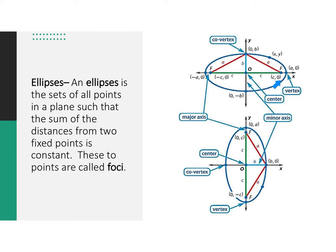So first off, what is an ellipse? This is a very chaotic picture, so I'm sorry about that. But what is an ellipse? An ellipse is the set of all points in a plane such that the sum of the distances from two fixed points is constant.